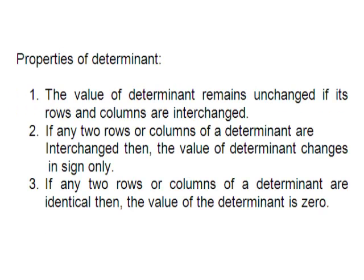Properties of determinants. Evaluation of determinants becomes easy with the help of the following properties. Property 1: The value of a determinant remains unchanged if its rows and columns are interchanged. Using this property, it can be seen that a determinant can be expanded using the elements in the first column also. Property 2: If any two rows or columns of a determinant are interchanged, then the value of the determinant changes in sign only.